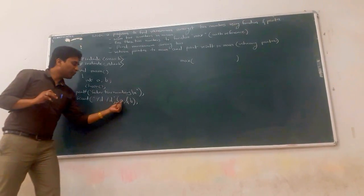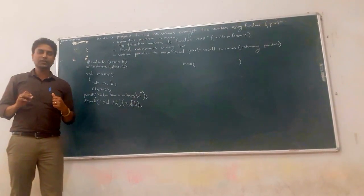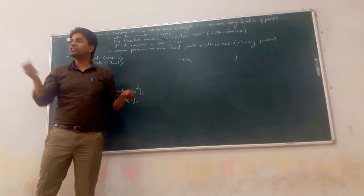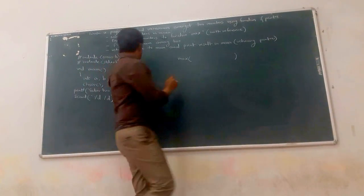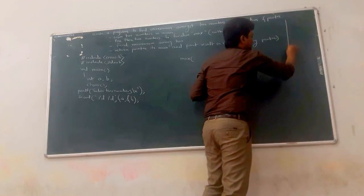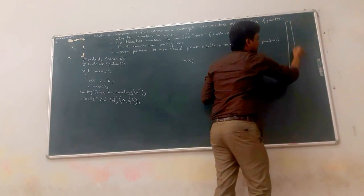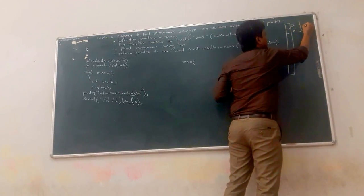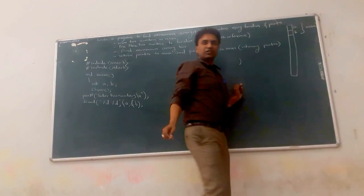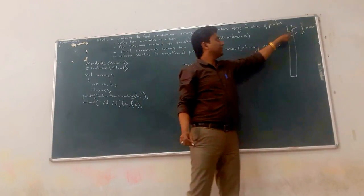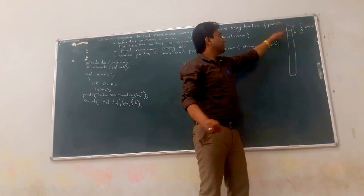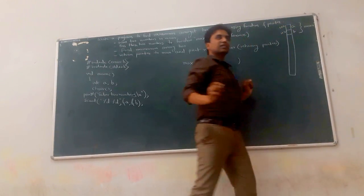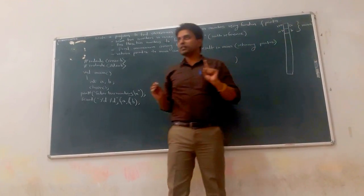Now we have to pass A and B to the max function by address, not by value. A and B are in the scope of the main function with addresses — suppose 100 and 102. When the user scans values, suppose 10 is assigned to A and 20 is assigned to B. We pass address of A and address of B — that is 100 and 102 — to the max function.